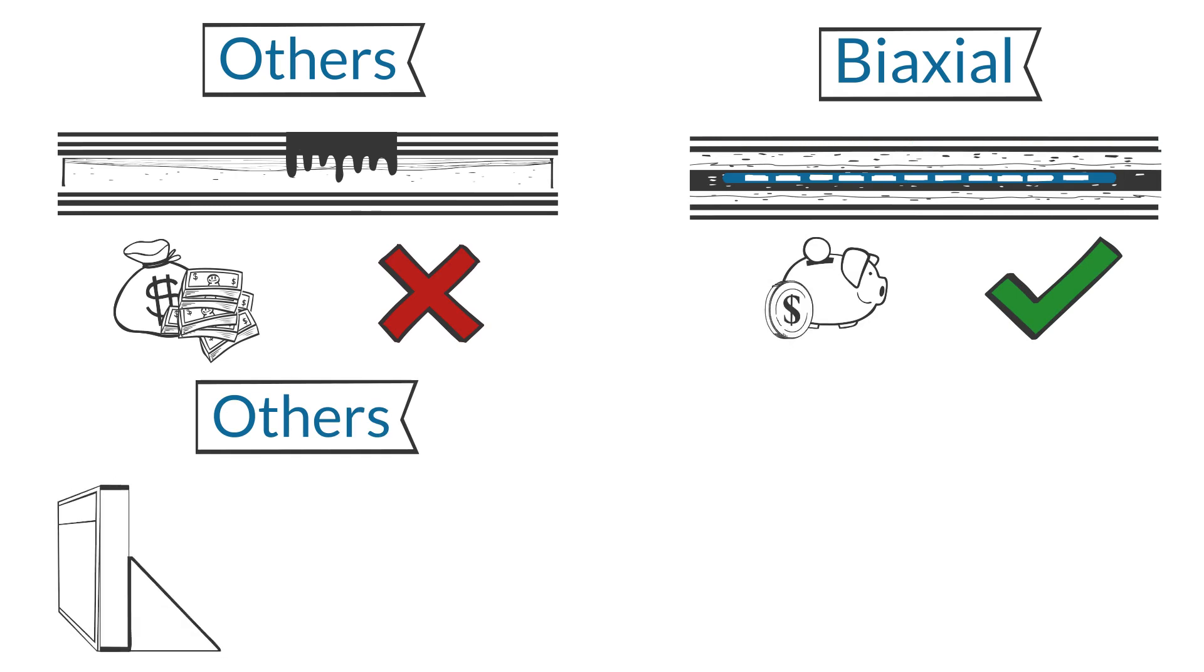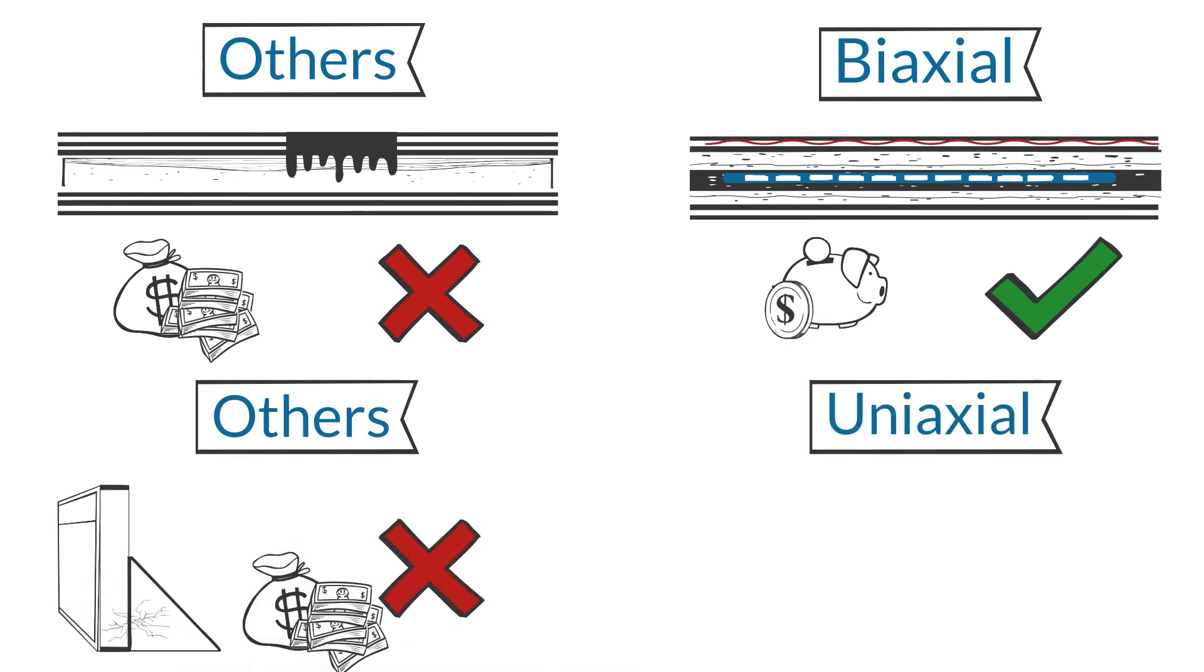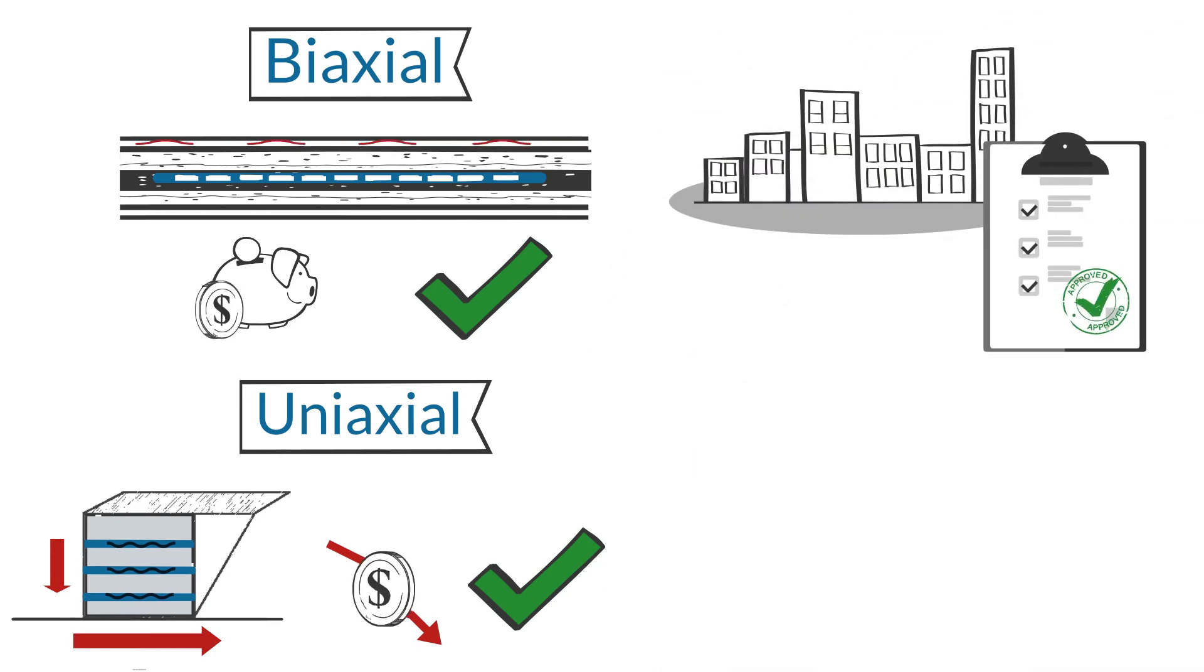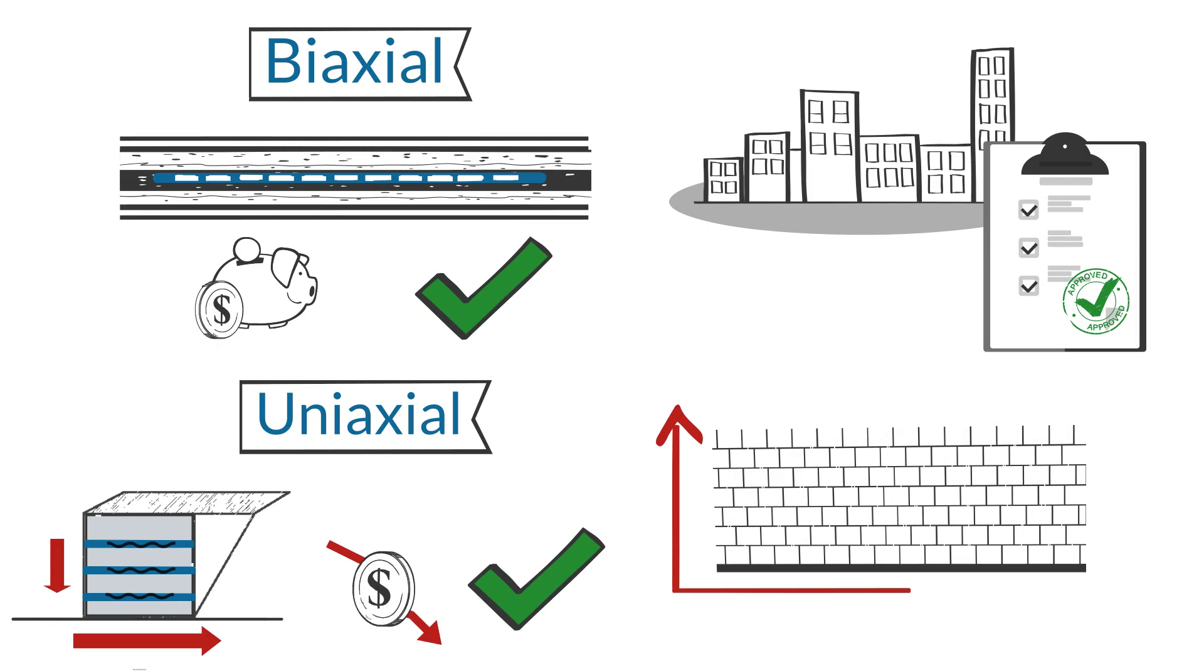By having a uniaxial geogrid reinforce slope or soil mass behind a retaining wall, you are greatly reducing the cost when compared to a traditional concrete gravity wall. Many municipalities also now require geogrid to be used in block wall construction over a certain height.